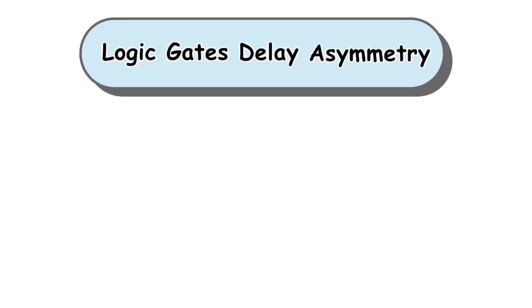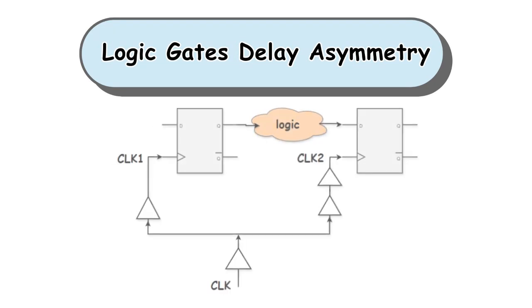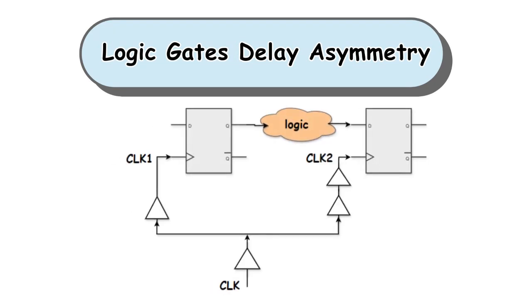Another reason is the logic gates delay asymmetry. Even with equal wiring lengths, the clock signal can experience delays due to logic gates in the clock path. The asymmetry in the delays of these gates causes variations in the clock signal's arrival time at flip-flops, resulting in clock skew. As shown in figure, even if the wiring length is identical, the variation of delays due to logic gates in the clock path will lead to variations in arrival times of clock at flip-flops.